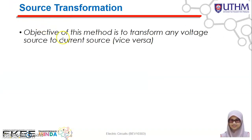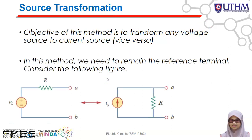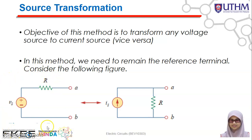The objective of source transformation is you are going to transform any voltage source to a current source, or you are going to transform a current source to a voltage source. So how to transform from a voltage source to a current source? We need to consider the following figure. Remember, if you are using source transformation, you need to retain the reference terminals — you can't change them. Here you have a voltage source connected in series with a resistor.